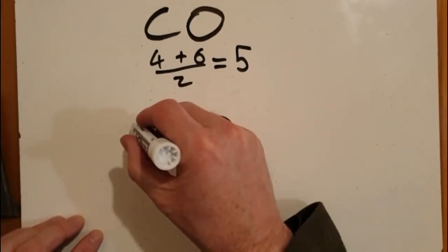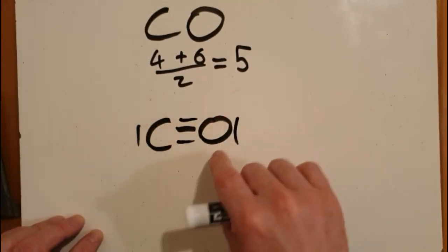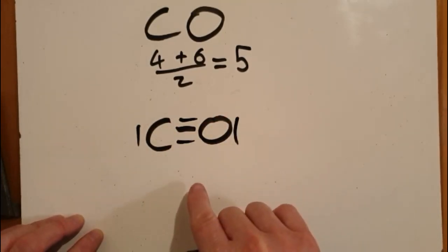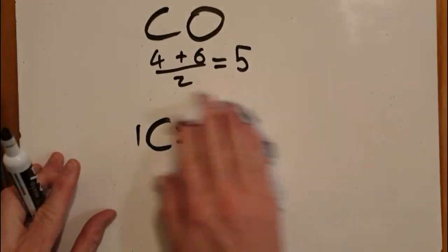So four more pairs to distribute, one, two, three, four, and we're done. That's carbon monoxide. You can draw it out in a different way.